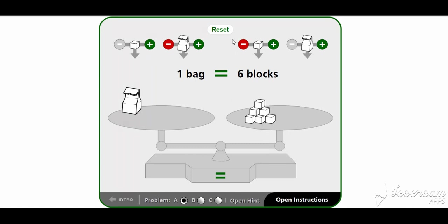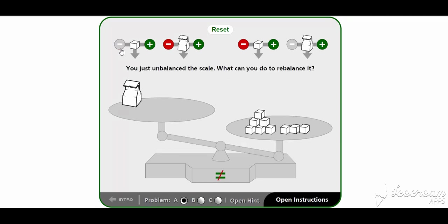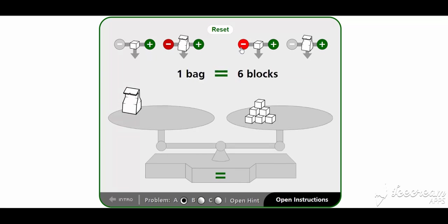The idea is that if we remove the same mass from both sides we can maintain the balance. But did I have to remove them one by one? Let's add back the blocks and see. If we remove all three blocks from the left at once — one, two, three — the scale is unbalanced. Then removing one from the right: still unbalanced. Removing two: still unbalanced. Removing three: balanced. So we could have removed three kilograms from both sides at the same time, but we wouldn't have known the mass of the bug that way.